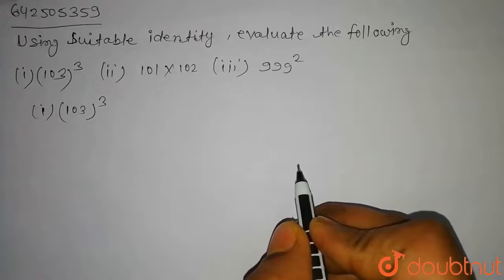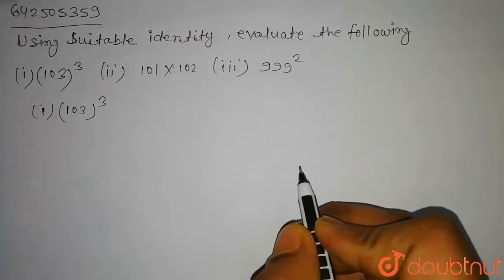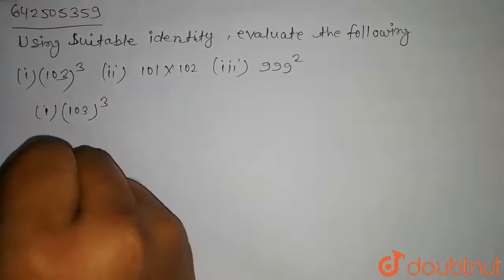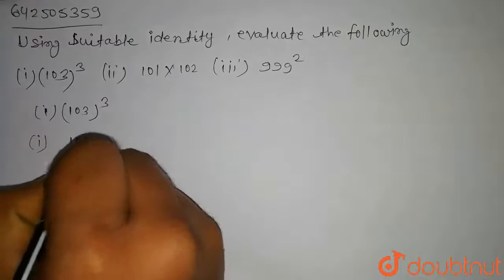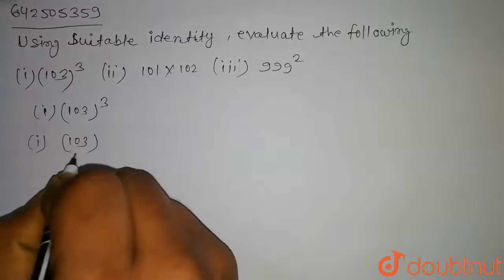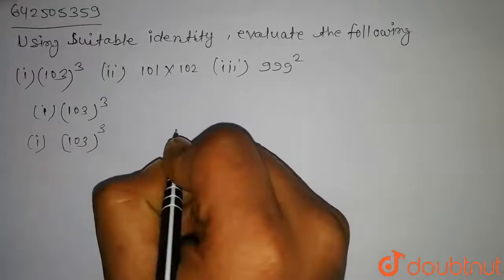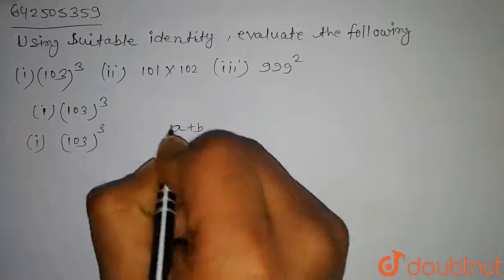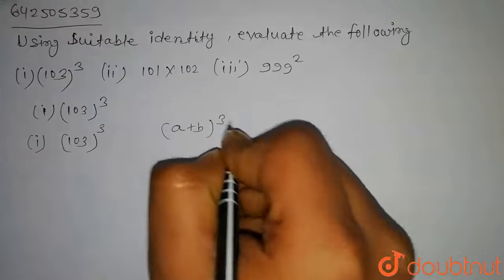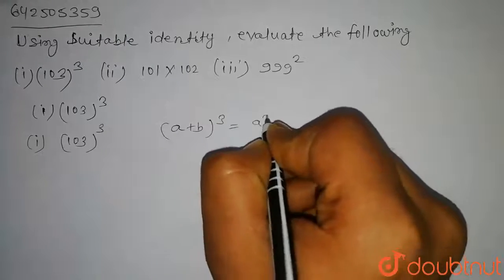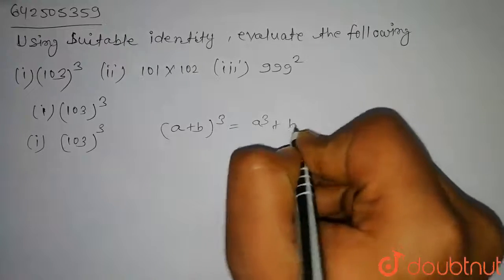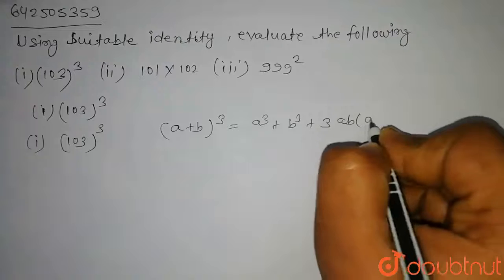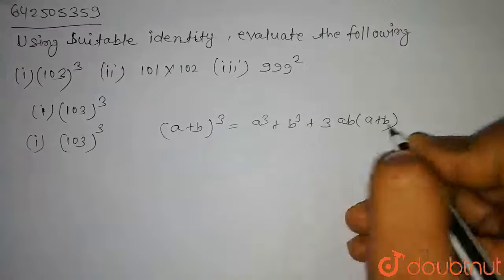So here we have to use a suitable identity and solve this question. In the first question we have to find the value of 103 to the power 3. We will use the identity: (a + b)³ = a³ + b³ + 3ab(a + b).